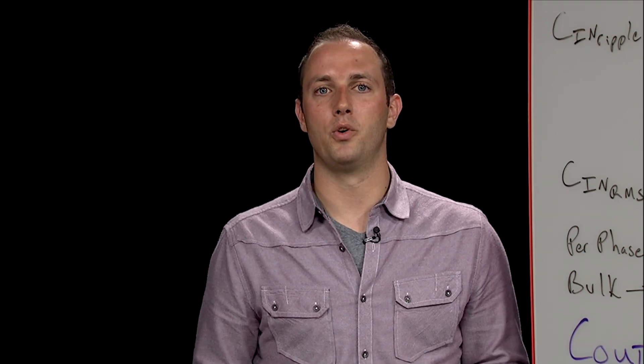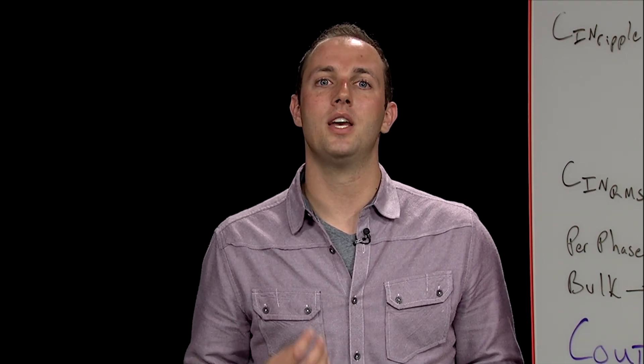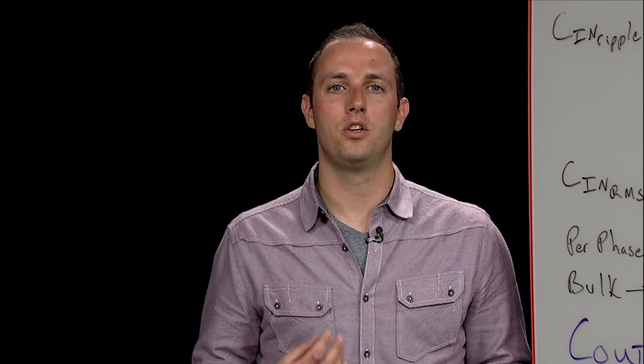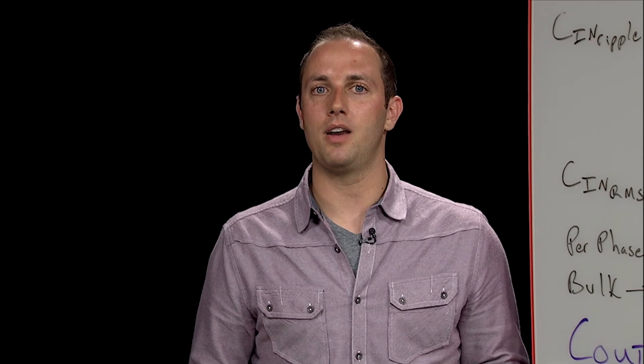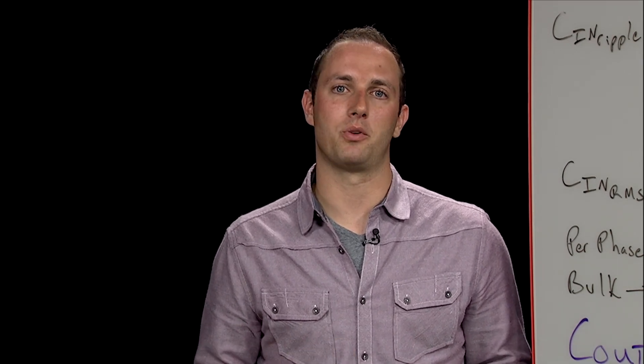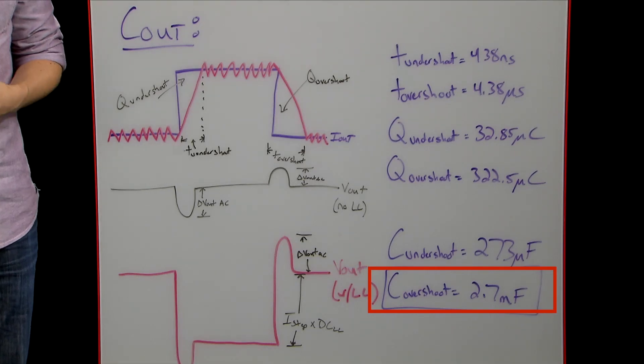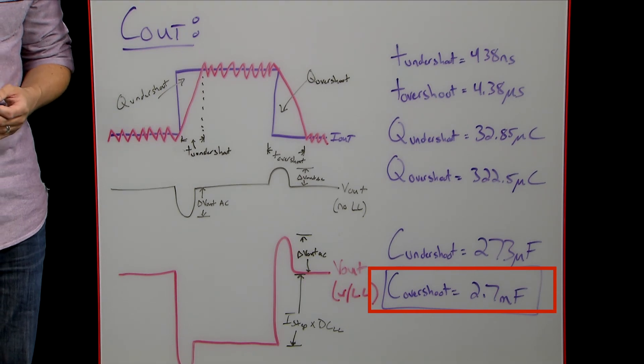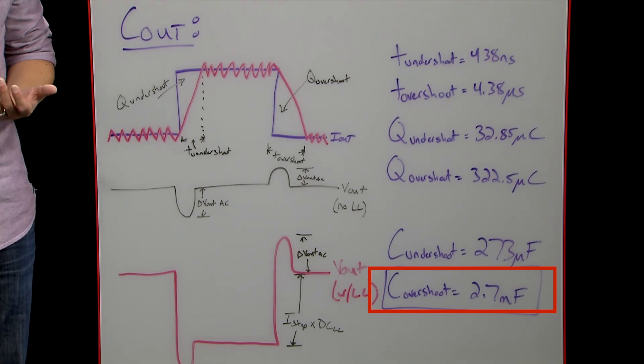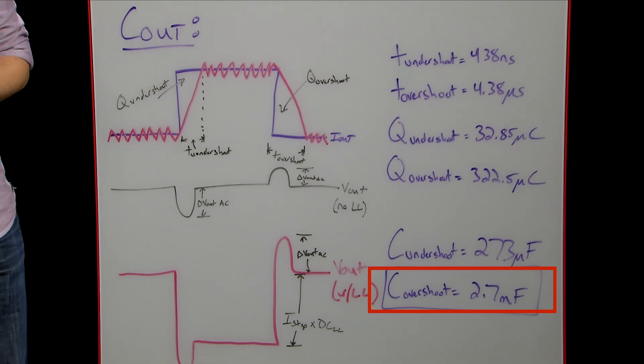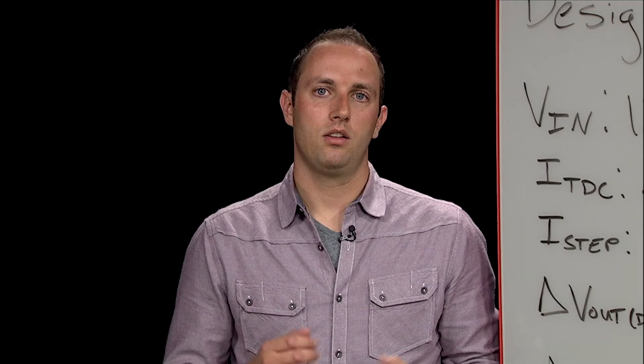For our design, we're going to use a mix of three 470, 6 milli-ohm bulk capacitors, 20 47 microfarad 0805 ceramics, and 25 22 microfarad 0805 ceramics. This will give us a total of 2.9 millifarads of capacitance, which is a bit higher than we calculated, in order to account for derating on the ceramic caps, though it's not as severe as what we would see on the input side of things.